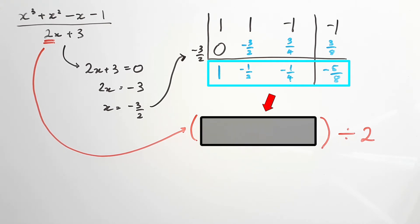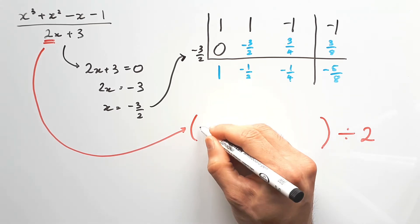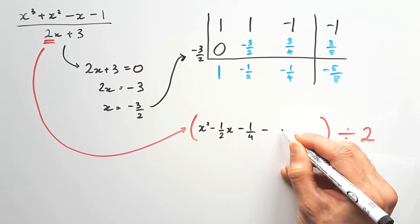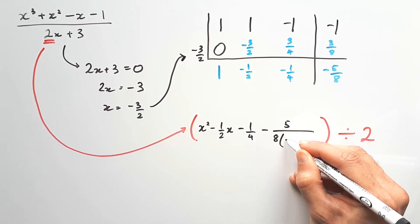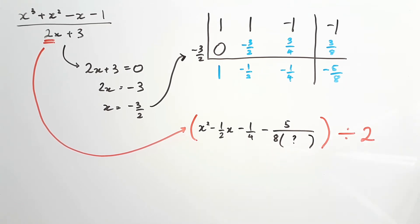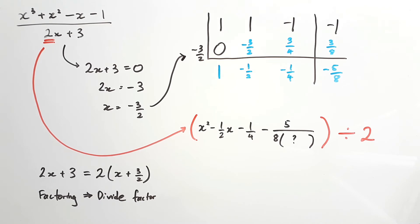Put these together into a quotient and remainder, and we have x squared minus 1 on 2x minus 1 on 4, minus 5 on 8 times something. That something is supposed to be the divisor, but we can't say it's 2x plus 3 right now, because technically we did a different kind of division here. To know what that is, all you need to do is take 2x plus 3 and factorize 2 from it. When you're factoring, you're actually dividing everything inside the brackets with that factor. So we end up with 2 times x plus 3 on 2, and so that becomes our divisor.